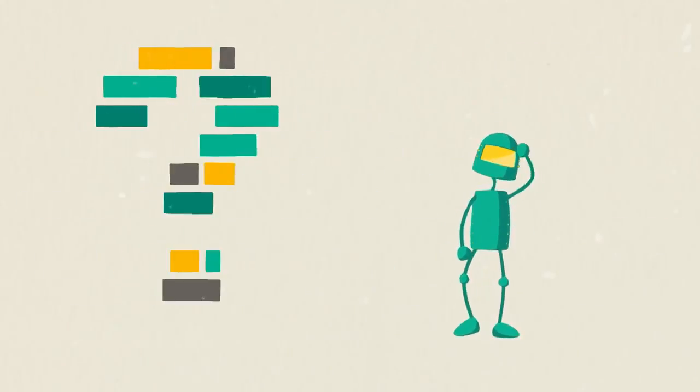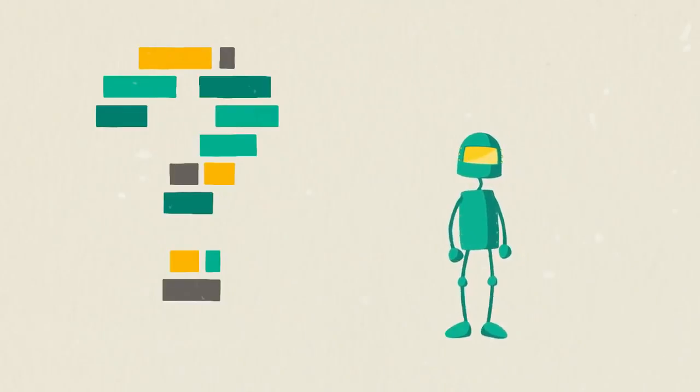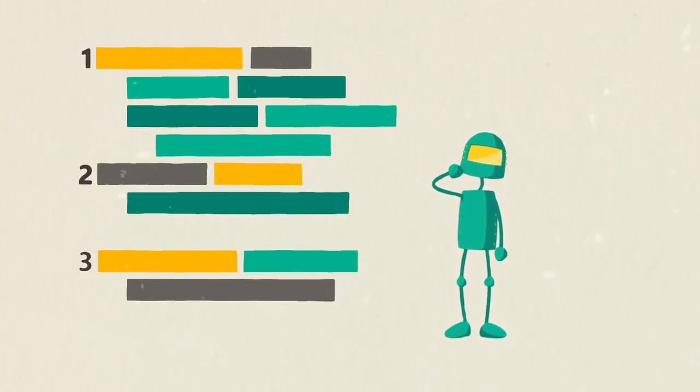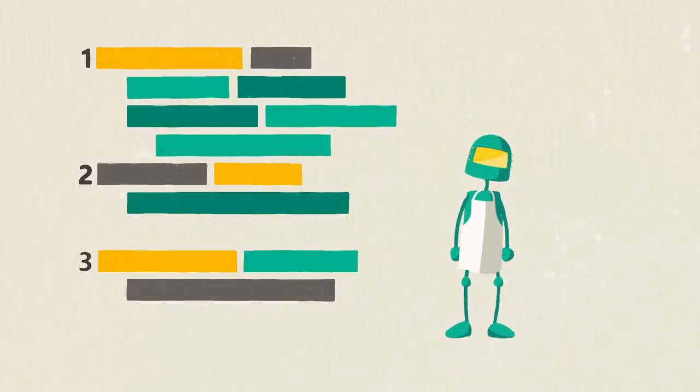So, what is code exactly? Code is a precise set of instructions a computer can understand. Think of it as a recipe. The instructions need to be precise, so whatever you're making turns out the way it should.